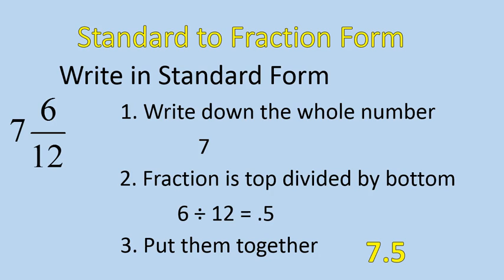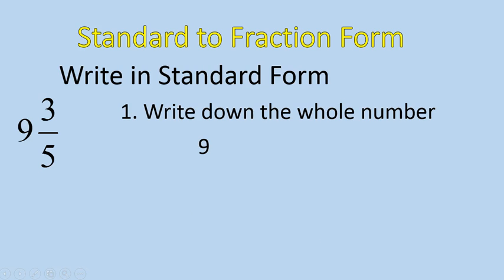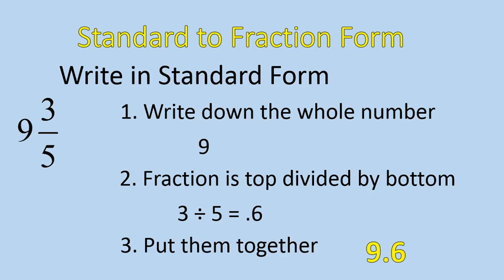We're going to do two more questions like this using the same steps. If you'd like to pause the recording and try this one on your own, you can. 9 and 3 fifths written in standard form: first, write down the whole number, 9. The fraction is the top divided by the bottom, so 3 divided by 5 gives you 0.6. Put them together: 9.6. Pretty straightforward.